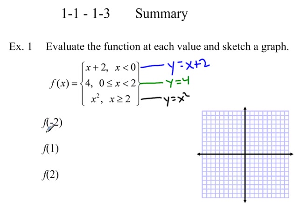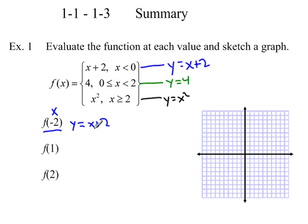Let's evaluate the function. For f(-2), plug -2 in for x. The domain restrictions tell us which piece to use — since x is -2, we use the first piece: f(x) equals x plus 2. So we get negative 2 plus 2, which equals 0. That's what f(-2) is equal to.